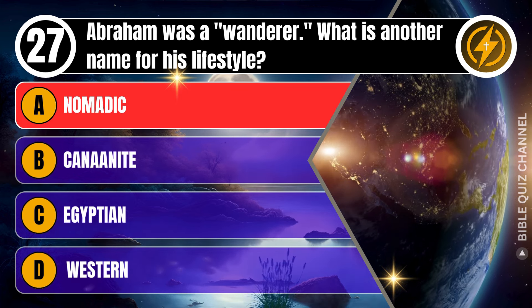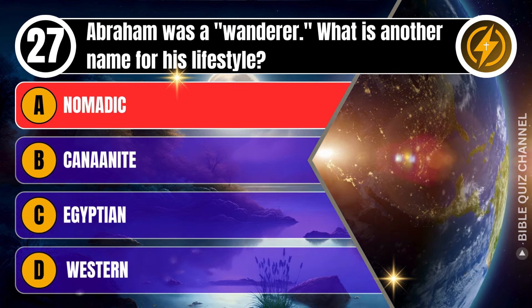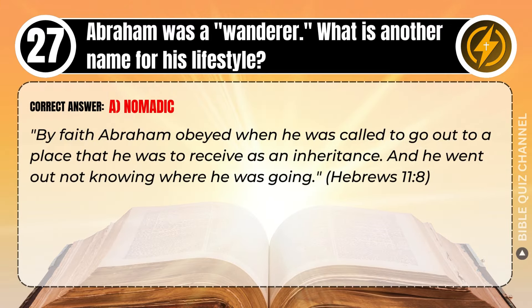Correct answer: A. Nomadic. Explaining the Bible — By faith Abraham obeyed when he was called to go out to a place that he was to receive as an inheritance, and he went out not knowing where he was going. Hebrews, chapter 11, verse 8.